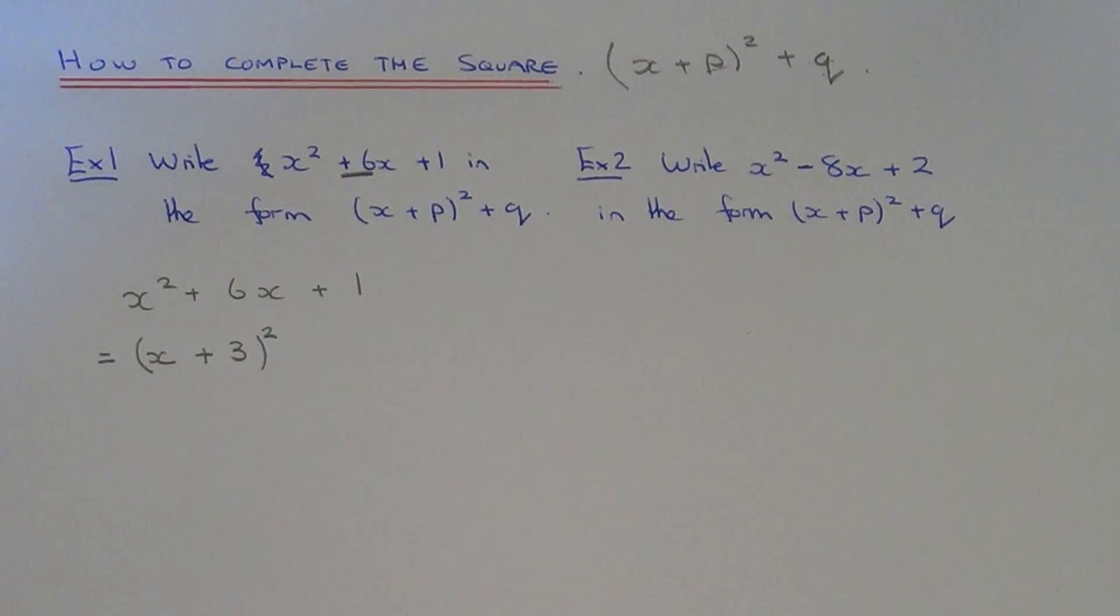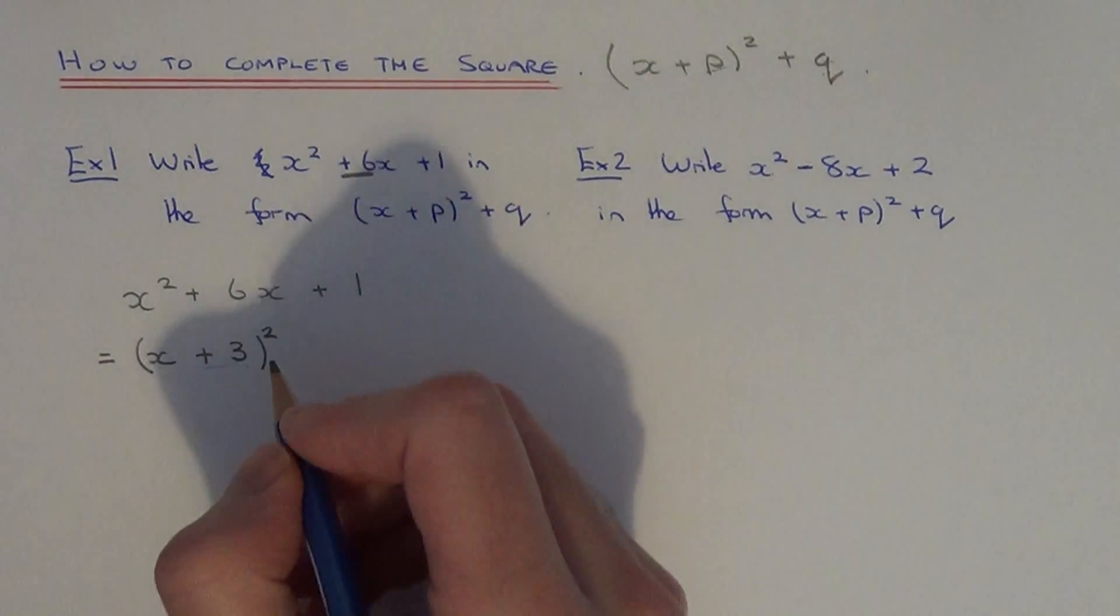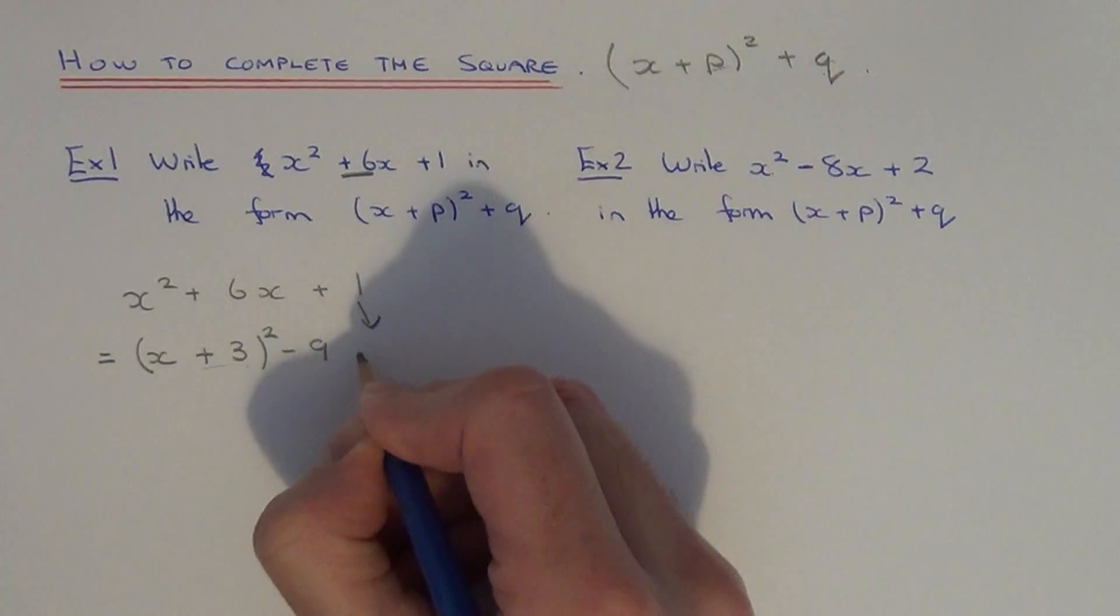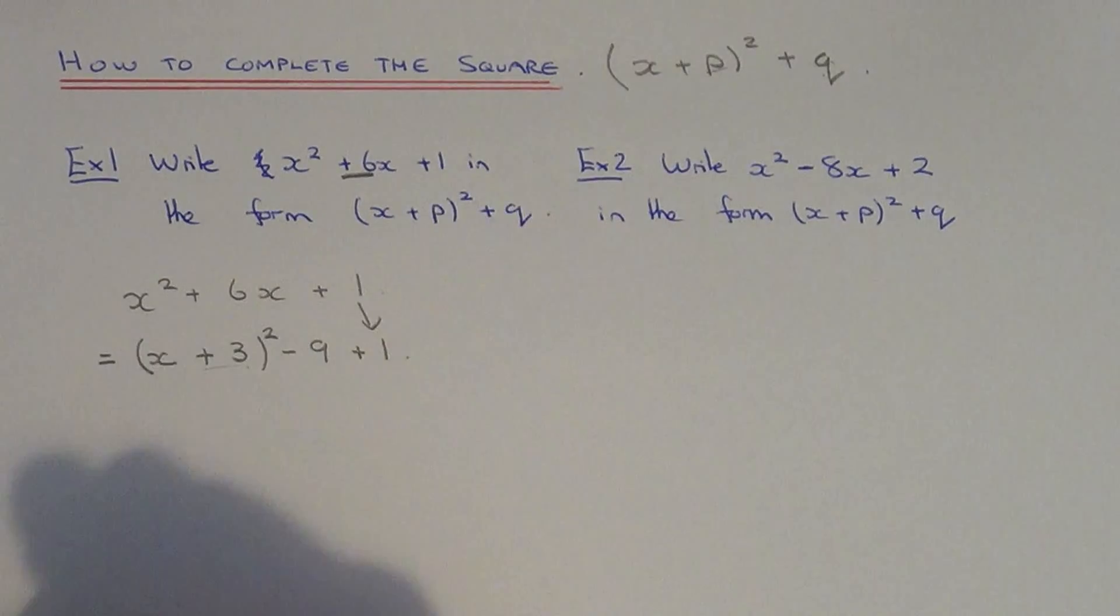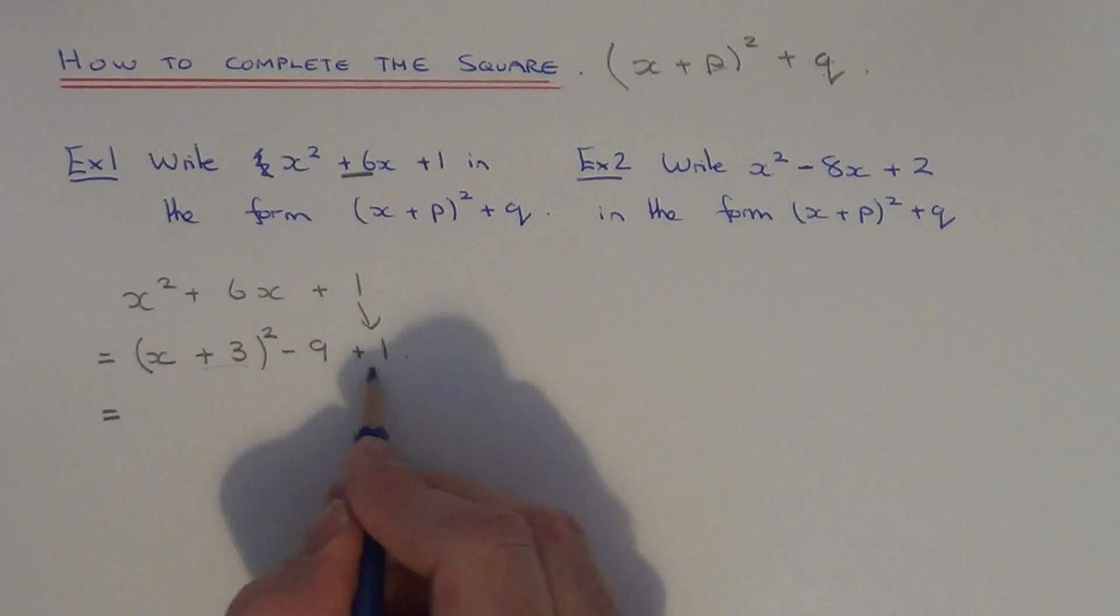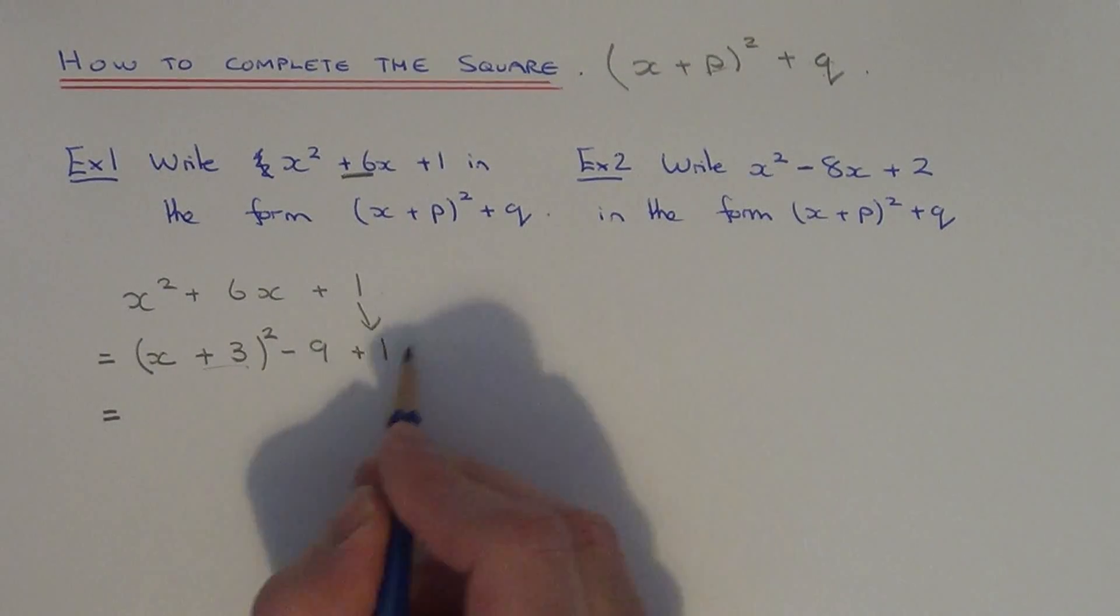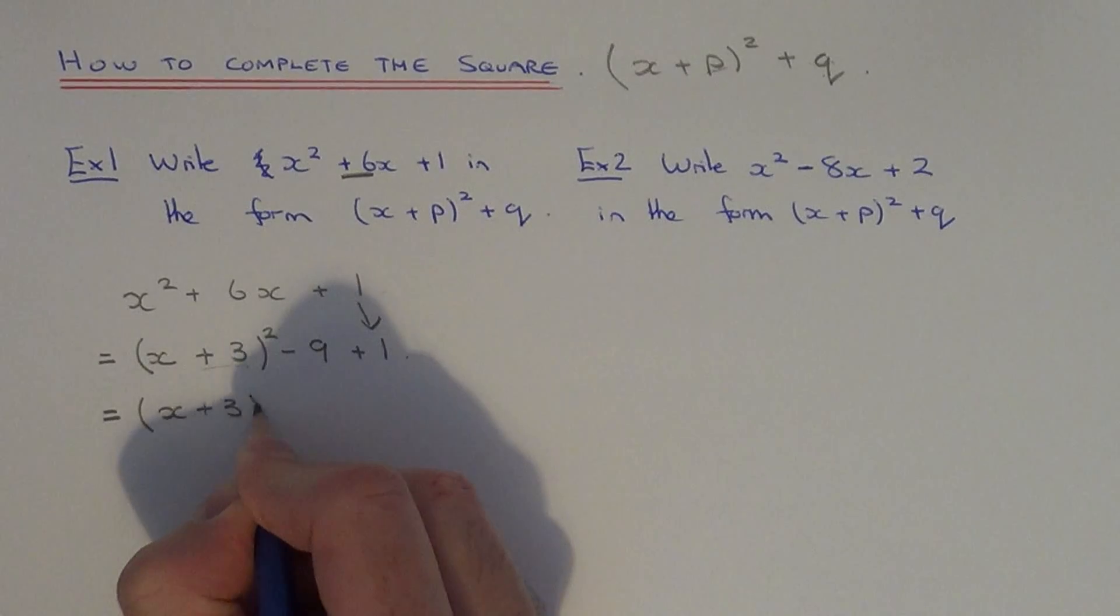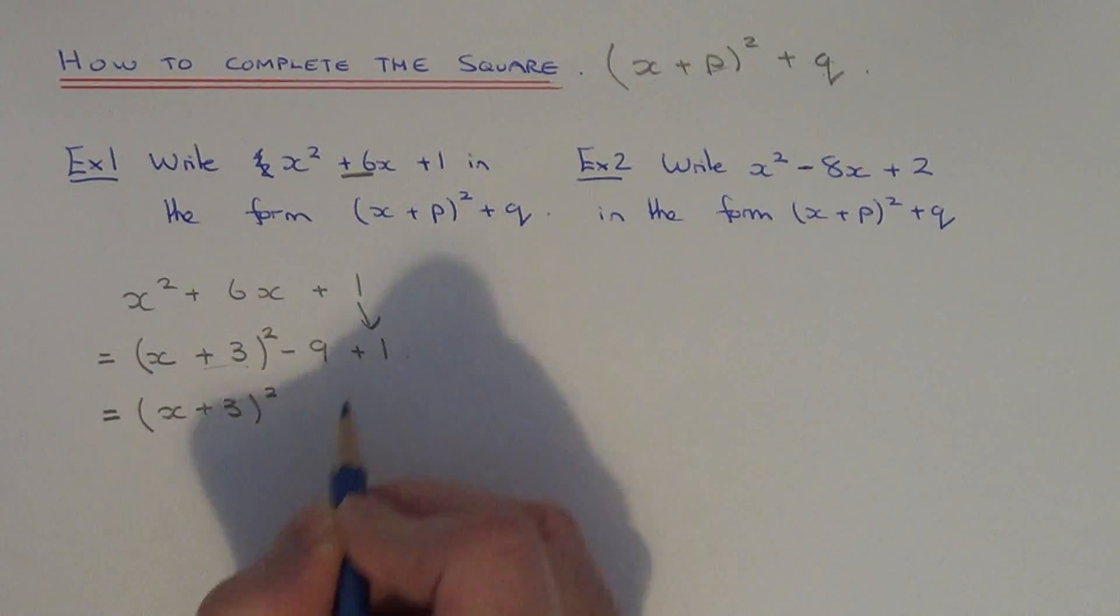The next thing you need to do is square the 3, which is 9, and take this off the end. Copy the plus 1 to the next line. Finally, we just need to simplify this end bit to give us q. Let's copy out the first bit again. Minus 9 plus 1 will give minus 8.